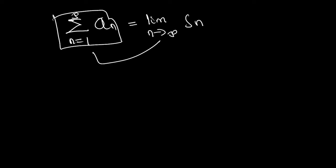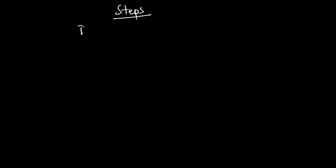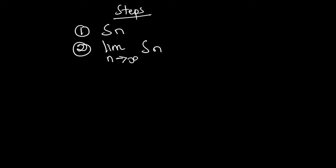Now let's move on to the actual steps for testing for convergence or divergence of an arithmetic series. This is quite simple. The first thing that you are going to do is to find the partial sum of the given series, then take the limit as n approaches infinity of that partial sum.